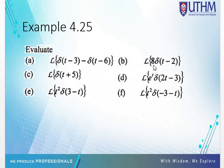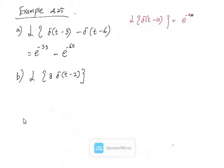Example b: the Laplace transform of 8 delta(t minus 2). Here 8 is a constant, so we take it outside. Then the Laplace transform of delta(t minus 2) with a equals 2 gives e^(negative 2s). Therefore the result is 8 e^(negative 2s).